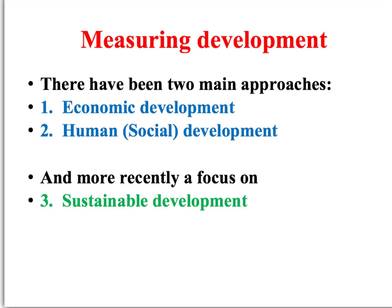Traditionally, there have been two main approaches to measuring development: economic development, which focuses on things like wealth and income, and human or social development, which focuses on key indicators such as education and healthcare. More recently, there's also been a focus on the environment and the concept of sustainable development. In the next screencast, we'll focus on economic development and human development, and in a couple of weeks' time we'll look at environmental indicators and sustainable development.